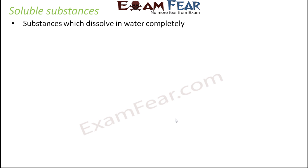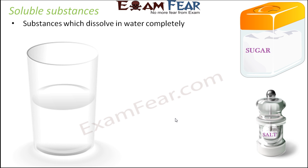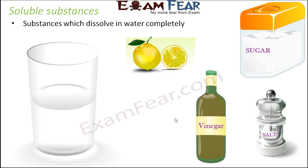Soluble substances are those which dissolve in water completely. Examples of soluble substances include sugar and salt. For instance, when making lime juice, you add lemon juice, sugar, and salt into water and mix them together — you get a completely dissolved solution where you cannot see either the sugar crystals or the salt particles. Some liquids are also soluble in water; vinegar and lime juice are examples of liquids that are completely soluble in water.